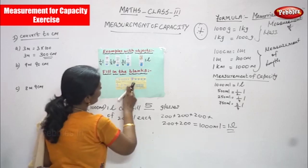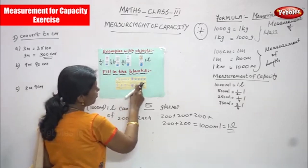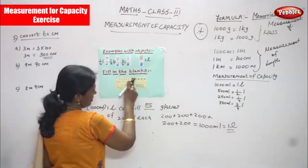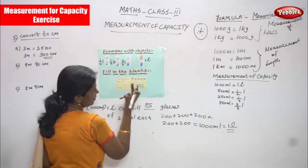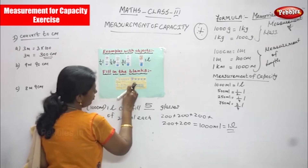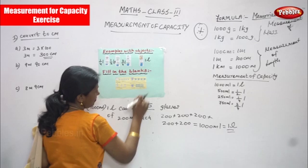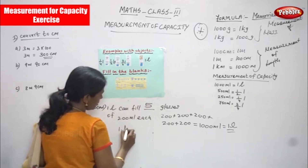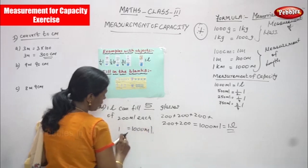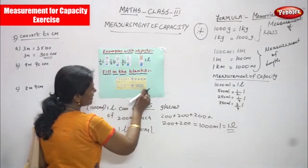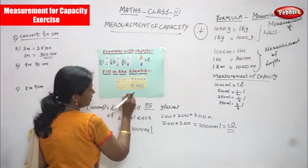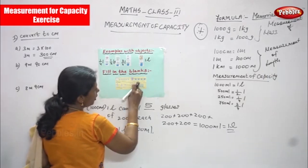Next one: one liter can fill four cups of dash ml of each. One liter is how much? You know that — if you convert into milliliter, that is thousand ml. So each glasses — four cups are given. One cup, two cup, three cup, four cups. So one liter can fill four cups of how many ml of each?